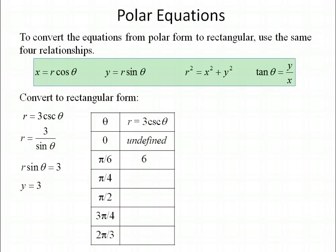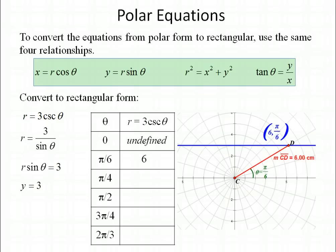Let's look at that on our grid. We know the line is y equals 3, so we draw that line. We also have the point (6, pi over 6). Remember, polar coordinates are given as radius comma theta. That means you're on the pi over 6 line and six units away from the pole, on the sixth circle out. You can see the relationship — that point sits right on the line y equals 3.